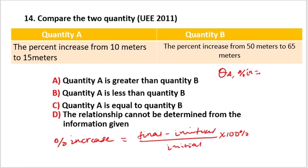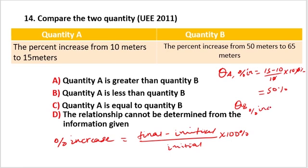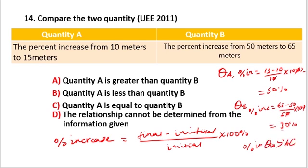Percentage increase from the initial value to the double value. For example, to find the final value for a given rate. The percentage increase of quantity A is greater than the percentage increase of quantity B — this is 3% of the quantity.